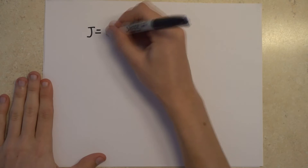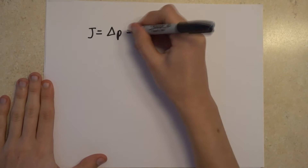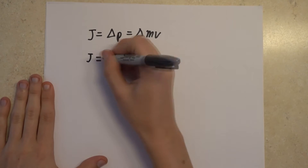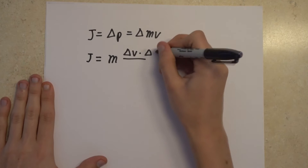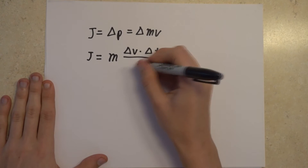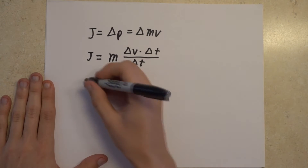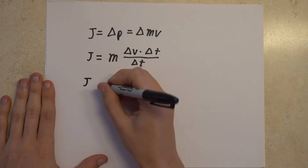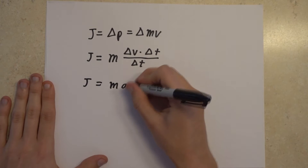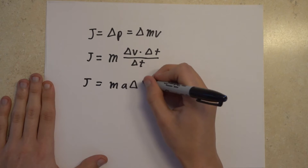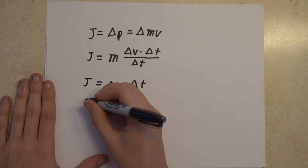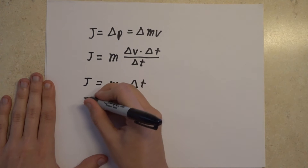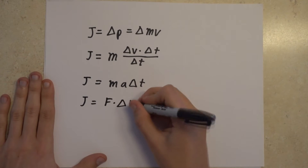The impulse-momentum theorem states that J equals delta P equals F times delta T. This is derived from J equals delta P equals delta(mV), and therefore J equals m times delta V divided by delta T times delta T. Since delta V divided by delta T equals acceleration, J equals MA times delta T. And since according to Newton's second law F equals MA, therefore J equals F times delta T.